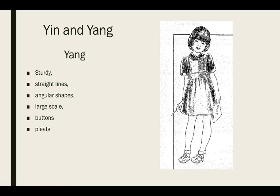Yang, however, is a little bit more sturdy. It has straight lines, angular shapes, a little bit more large scale items. Buttons and pleats are also usually common. We can see a lot of straight lines happening here on this picture. A little bit more of an angular shape. You've got a little bit more of a triangle here. Large scale items as well.